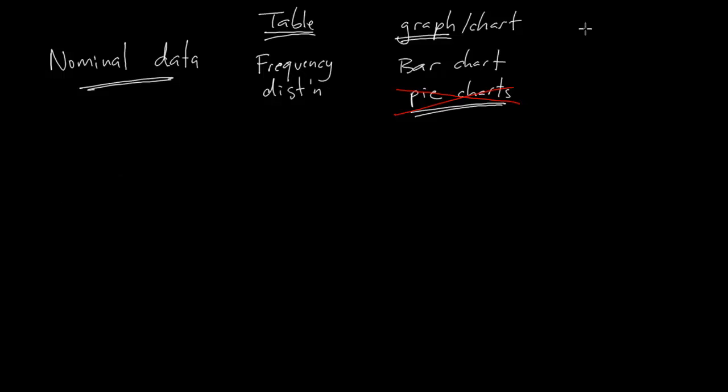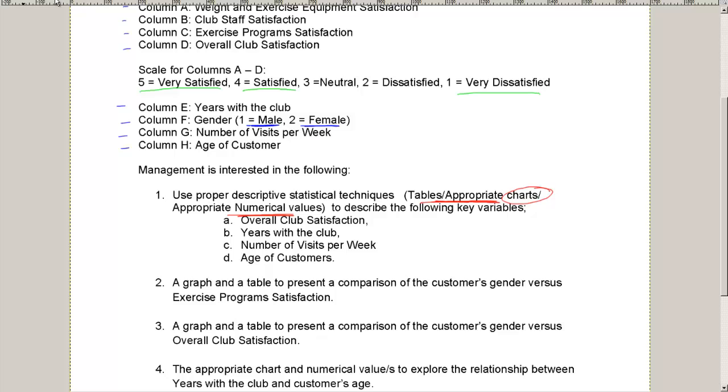And then finally, my numerical - how did they put it - numerical values. This is where chapter four comes in, where we talk about things like the mean, the median, the mode, variance, standard deviation, all these sorts of things.